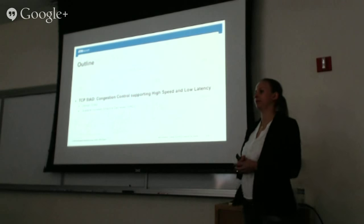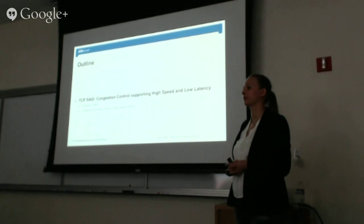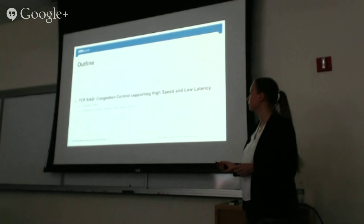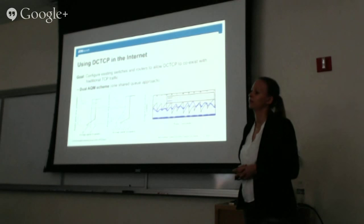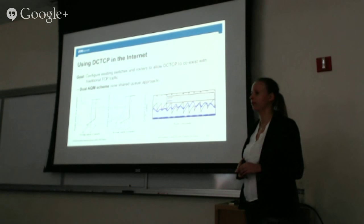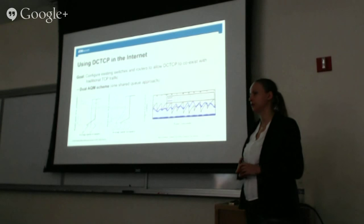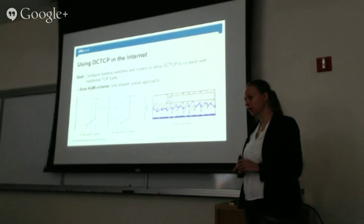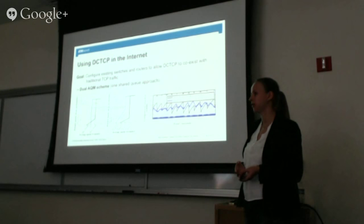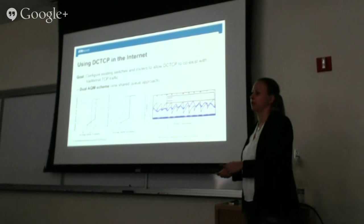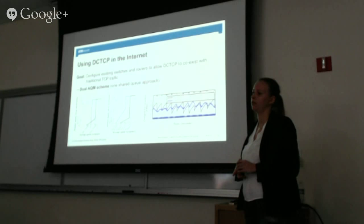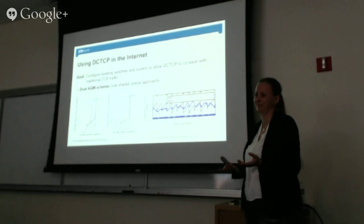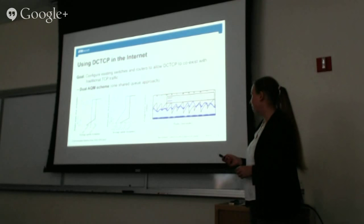Q: Regarding incremental deployment — if you start using DCTCP and your routers don't support it, will your congestion control collapse? A: No. If you use DCTCP with ECN and your router doesn't support it, you get far fewer markings than you would normally, so you get a much larger share of the capacity than the competing flows. You'd essentially starve all the other flows.